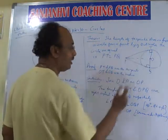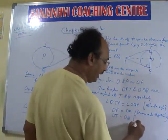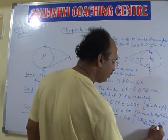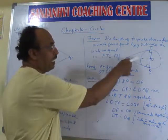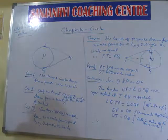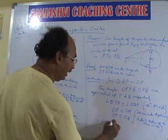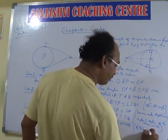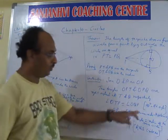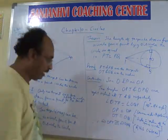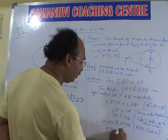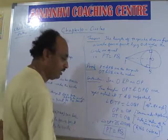One side: OT is equal to OQ, because they are radii of the same circle. Therefore these two triangles are congruent by RHS criteria — Right angle, Hypotenuse, Side. Therefore, once the two triangles are congruent, the corresponding sides are also equal, which means PT is equal to PQ. So this is proved.